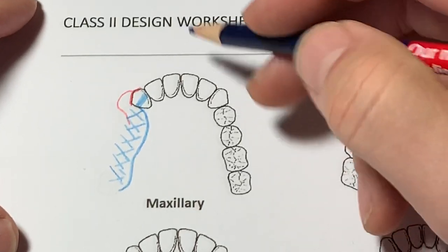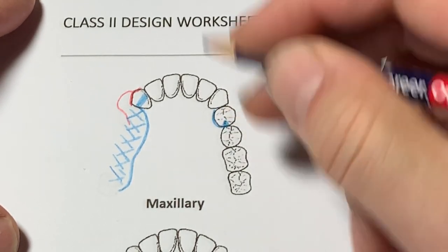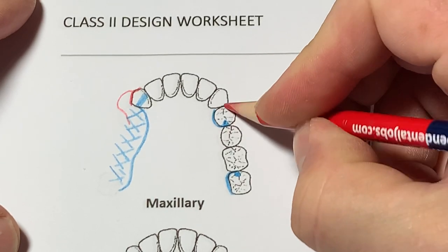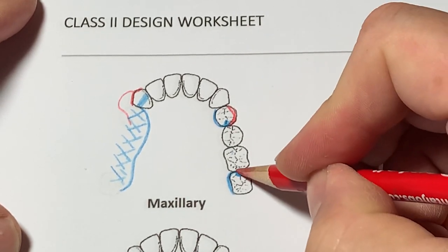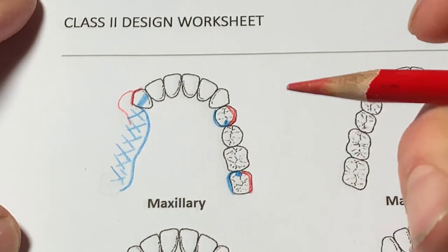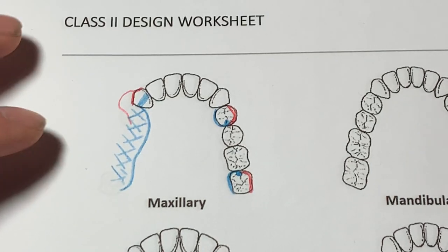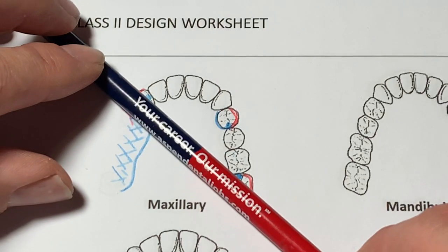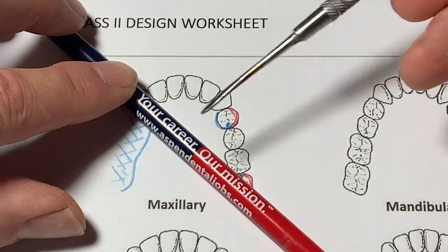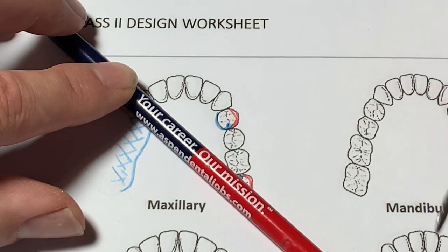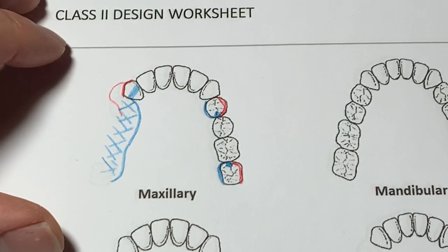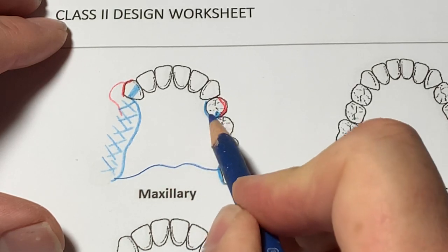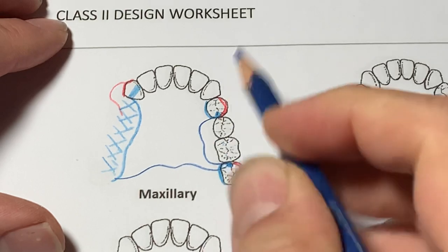Looking at our rules of design: if possible, clasp one tooth as anterior as possible in the posterior region. When there's no modification, one is as posterior as possible — that would be tooth #24 and #27 — then clasp with the simplest clasp form, the acres clasp. The fulcrum line is drawn through #13 and #27; the clasp at #24 is intersected medially, giving us indirect retention with no need for any auxiliary rest.